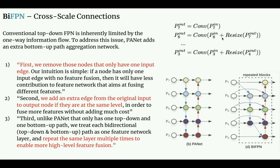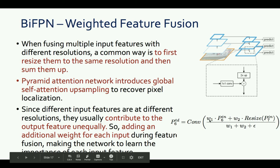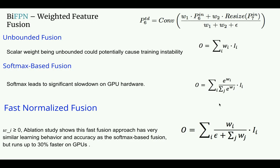To address this, the authors introduce learnable weights for each input to every node — called weighted feature fusion. For a node with two inputs, weights w1 and w2 are assigned, and the network learns them from data. These are static weights, not attention weights — in attention, weights are conditioned on the input, whereas here w1 and w2 are fixed. For example, if w1 is 0.3, the network always pays 30% attention to the P6 input and 70% to the P7 input.